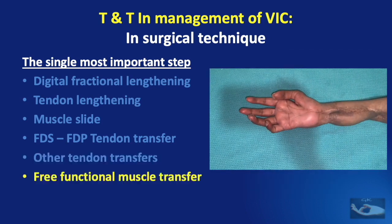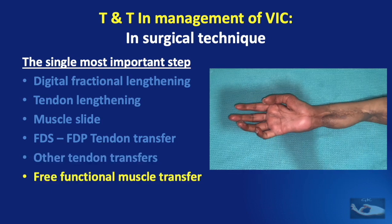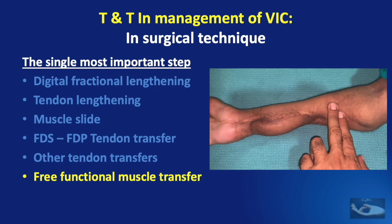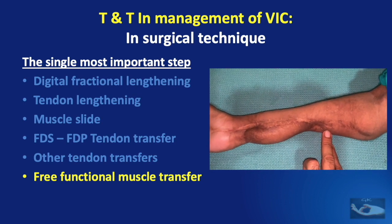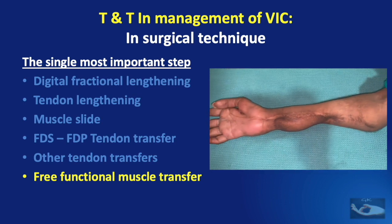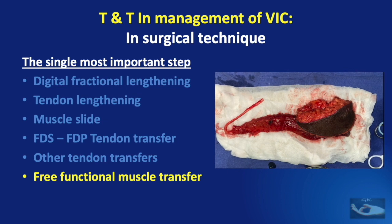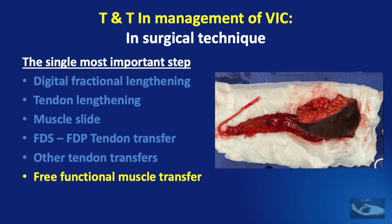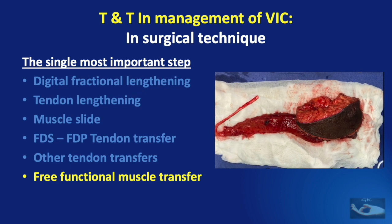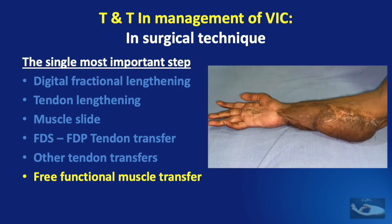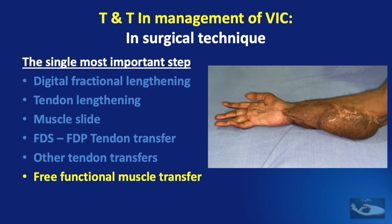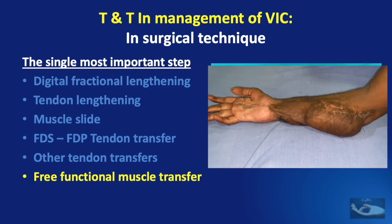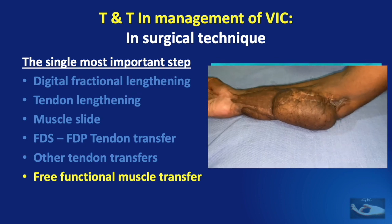As far as the use of free functional muscle transfer for Volkmann's ischemic contracture is concerned, the gracilis is most commonly used. The important steps are the meticulous harvest of the gracilis muscle — if possible including a skin paddle for monitoring — adjusting the tension of the muscle when it is being sutured after creating a good origin and a strong insertion. The muscle should not be overly stretched or too relaxed. A good vascular anastomosis and a nerve coaptation are required for achieving good function.